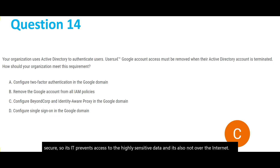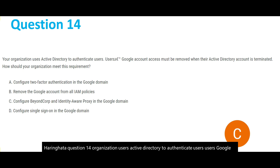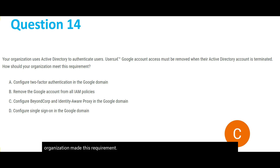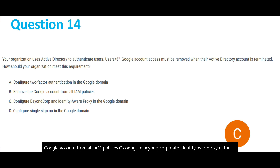Heading on to question 14. Your organization uses Active Directory to authenticate users. Users' Google account access must be removed when their directory account is terminated. How should your organization meet this requirement? Option A is configure two-factor authentication in the Google domain. Option B is remove the Google account from all IAM policies. Option C is configure BeyondCorp and Identity-Aware Proxy in the Google domain. Option D is configure single sign-on in the Google domain.